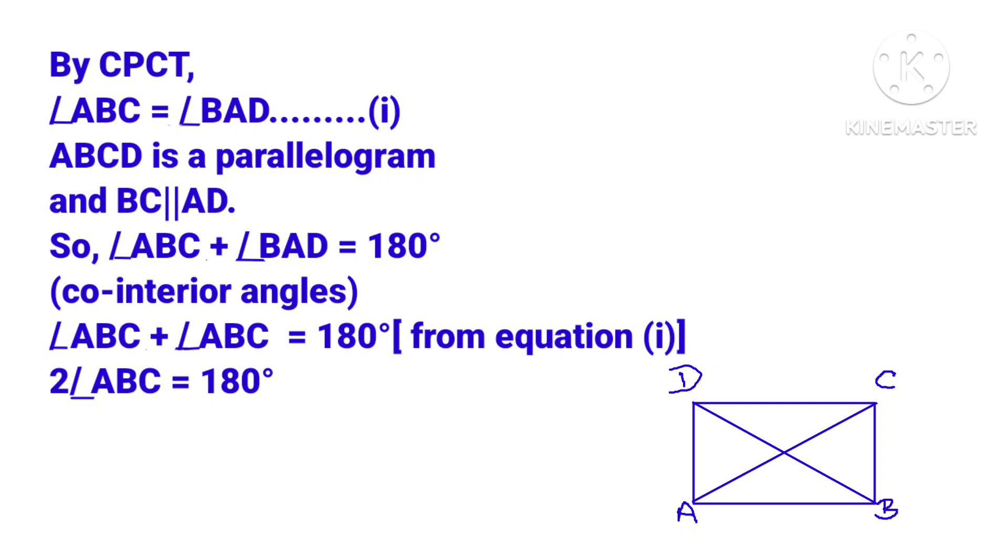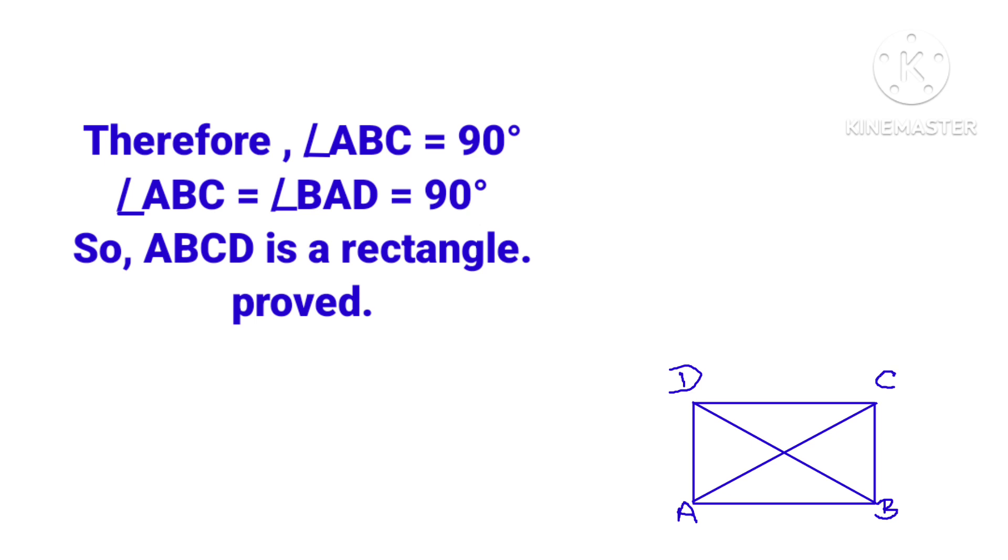Angle ABC plus angle ABC is equal to 180 degrees. 2 times angle ABC is equal to 180 degrees. Therefore, angle ABC is equal to 90 degrees.